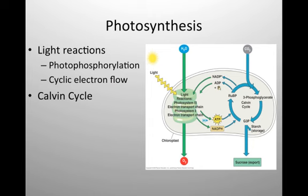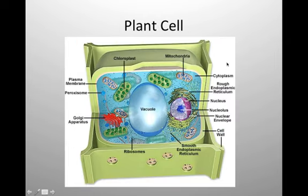Both photosynthesis and parts of cellular respiration occur in double-membrane organelles. In the plant cell, the mitochondria is where cellular respiration occurs — and don't forget that cellular respiration still occurs in plant cells. Although plants make their own energy in the form of sugar and ATP, they also need to break that energy down, so they need mitochondria too. If plant cells only had chloroplasts and no mitochondria, they would only be able to make things, not break things down.